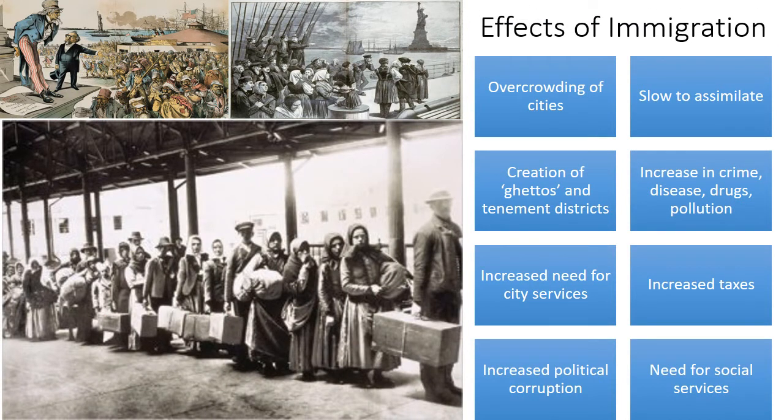The immigration of the Gilded Age had dramatic effects on the United States. One of the biggest side effects was the overcrowding of cities due to urbanization. Cities grew too quickly, leading to problems that city governments were ill-equipped to handle. Tenements were overcrowded, contributing to poverty and the creation of ethnic ghettos. These districts became riddled with crime, disease, drugs, and pollution. Overcrowding also increased demand for city services such as schools, police, fire departments, sanitation, and transportation, which most cities had trouble providing. Cities had to increase taxes and relied on political corruption to complete many projects. Most immigrants, because of their ethnic backgrounds, were very slow to assimilate — their culture was so drastically different from mainstream American culture that they resisted it. It would be their children who would Americanize and join mainstream culture, largely thanks to public school education.